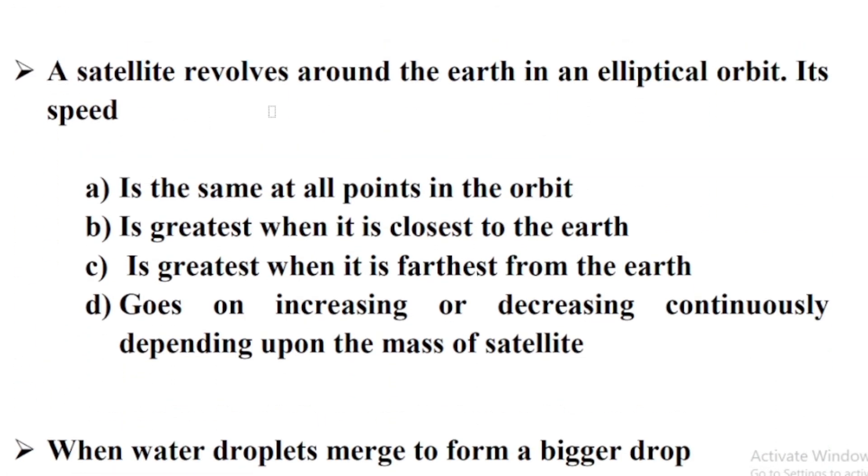A satellite revolves around the earth in an elliptical orbit. Its speed Option B is greatest when it is closest to the earth.